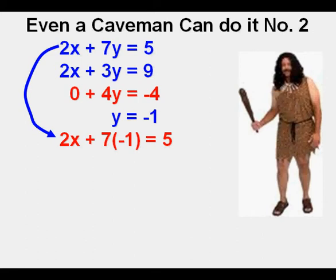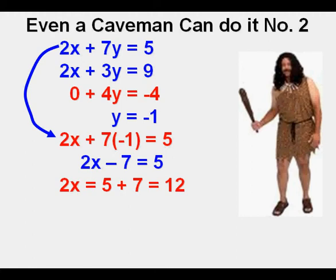Now he can substitute negative 1 for y in one of the original equations. Let's try the first one this time. So he has 2x plus 7 times negative 1 equals 5. We're left with 2x minus 7 equals 5. He gets rid of the negative 7 by making it plus 7 on the right side. So he has 2x equals 12. So he ends up with x equals 12 divided by 2, or that would be x equals 6. Aug writes down his solution of 6 comma negative 1.